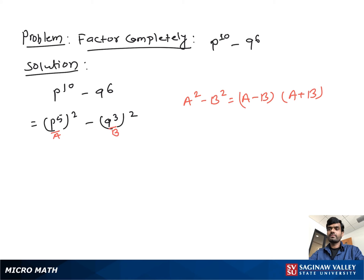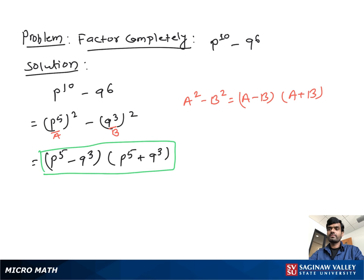Suppose p to the 5 as a and q to the third as b, so we can write this as p to the 5 minus q to the third, times p to the 5 plus q to the third. We cannot further simplify this, so this is our final complete factorization.